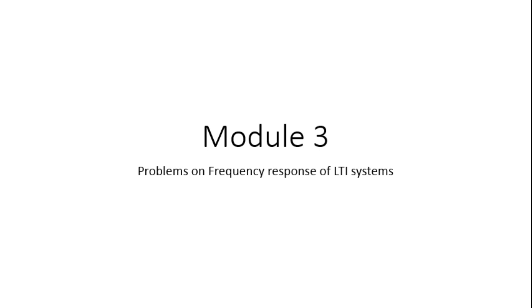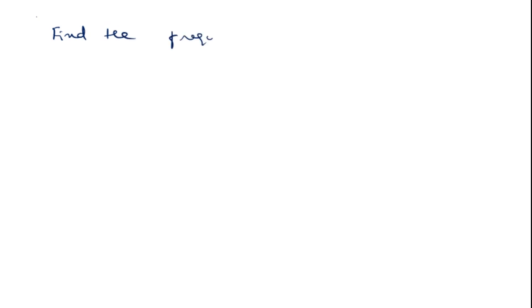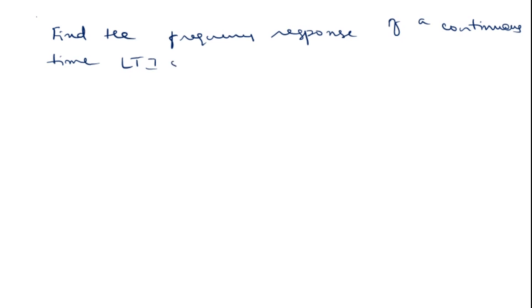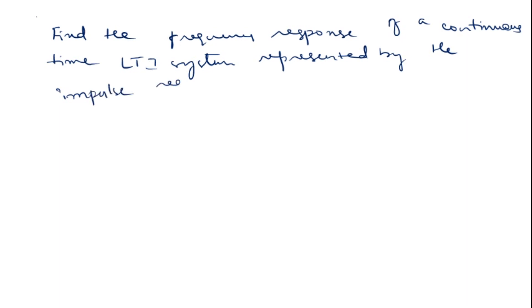Today we are going to discuss some problems on frequency response of LTI systems. First problem: find the frequency response of a continuous time LTI system represented by the impulse response H(t) = e^(−|t|).